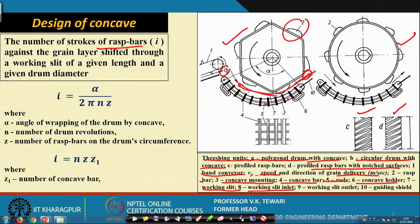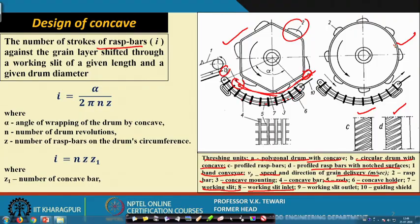The inlet is labeled S-plus, and element number 10 is the guiding shield — this directs the material after it has been threshed. So this thresher is of a polygon type drum, and the other is a circular drum, and we have talked of each and every element here.